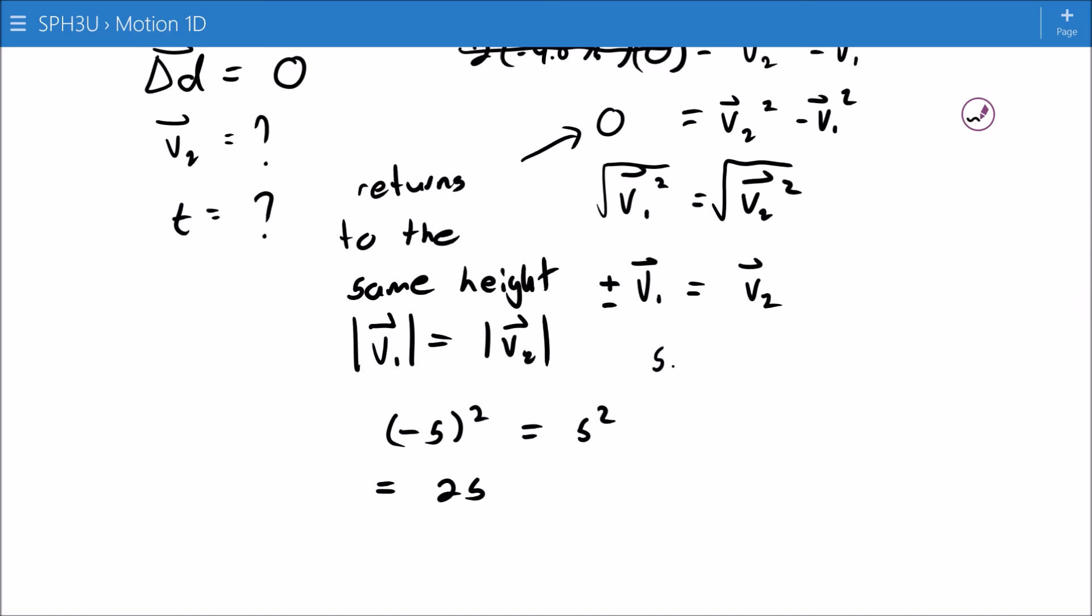And so I know my V2 is either 5.4 meters per second plus or 5.4 meters per second minus. If I remember my motion, the object went up and it came back down. So my V2 is when it's going down, which means I need the negative root. V2 is equal to negative 5.4 meters per second.